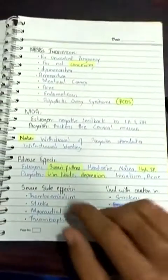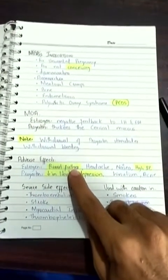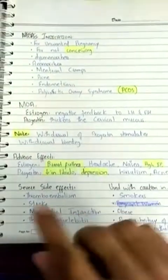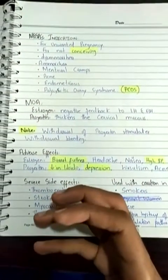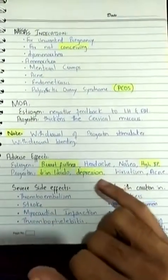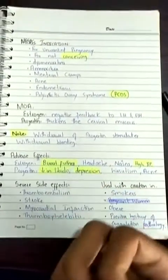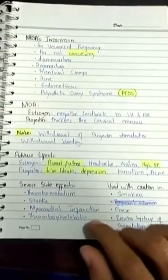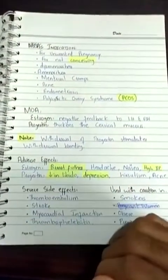Due to estrogen: breast fullness, headache, nausea — a continuous feeling of vomiting — and high blood pressure. Regarding progestin: it decreases libido, which is important in both males and females as it stimulates interest in intercourse. Progestin can also cause depression, hirsutism — growth of hair or mustache on women's faces — and acne.